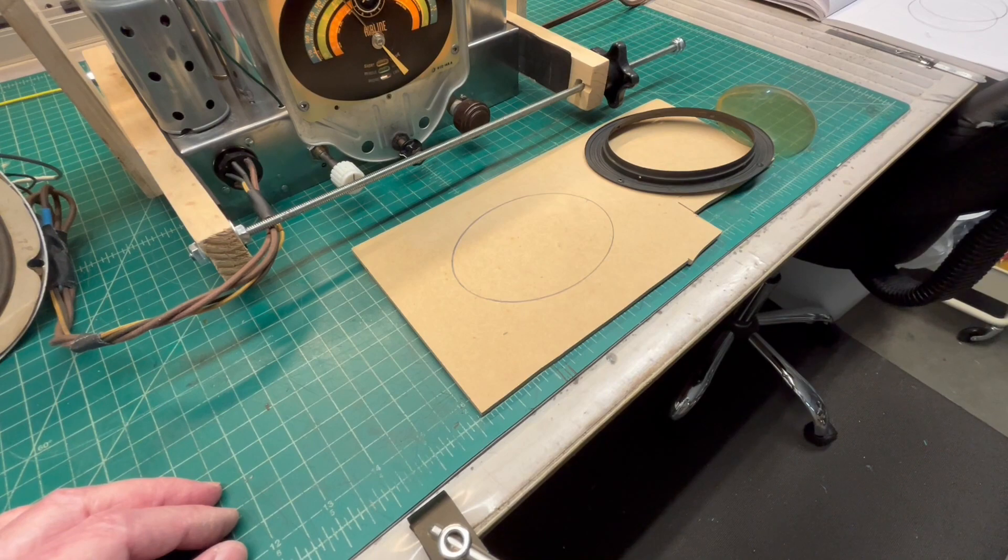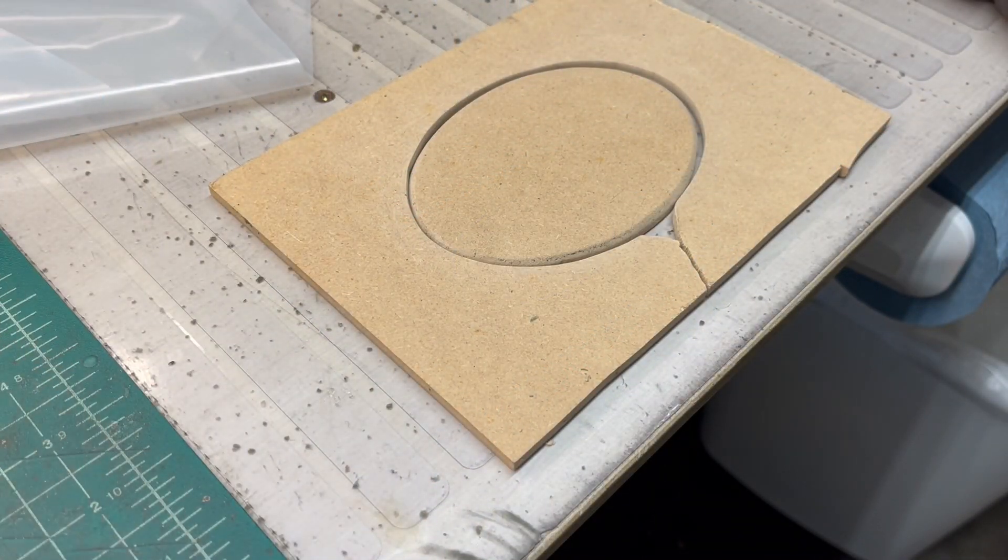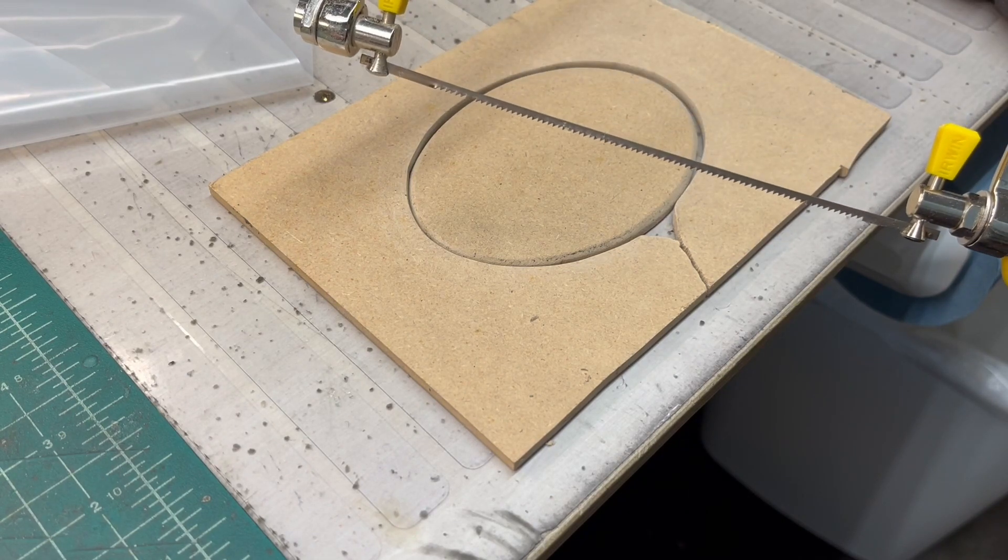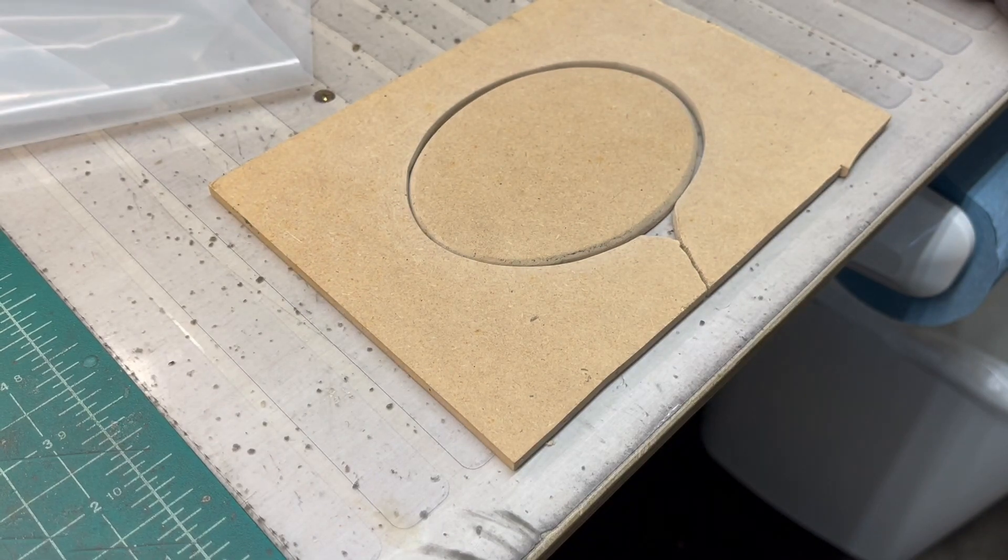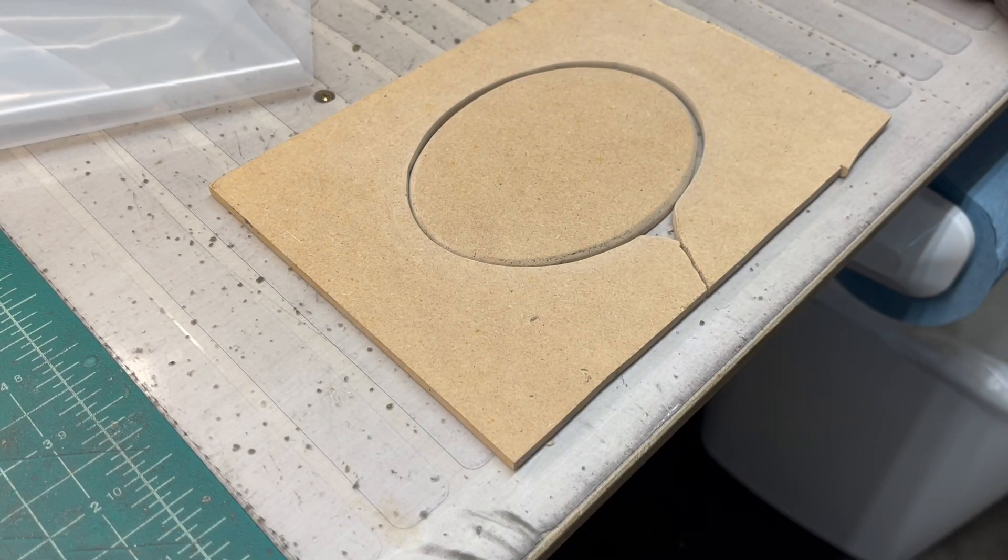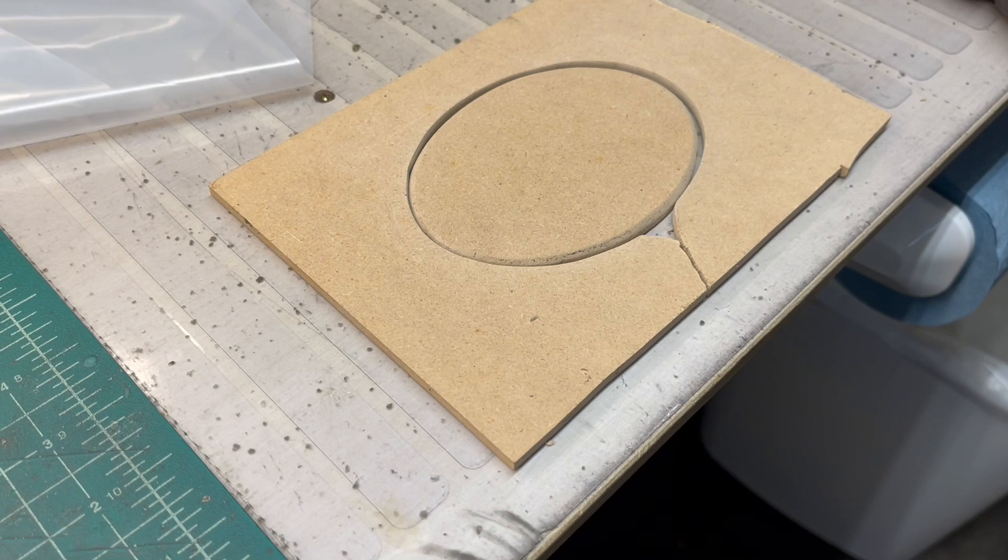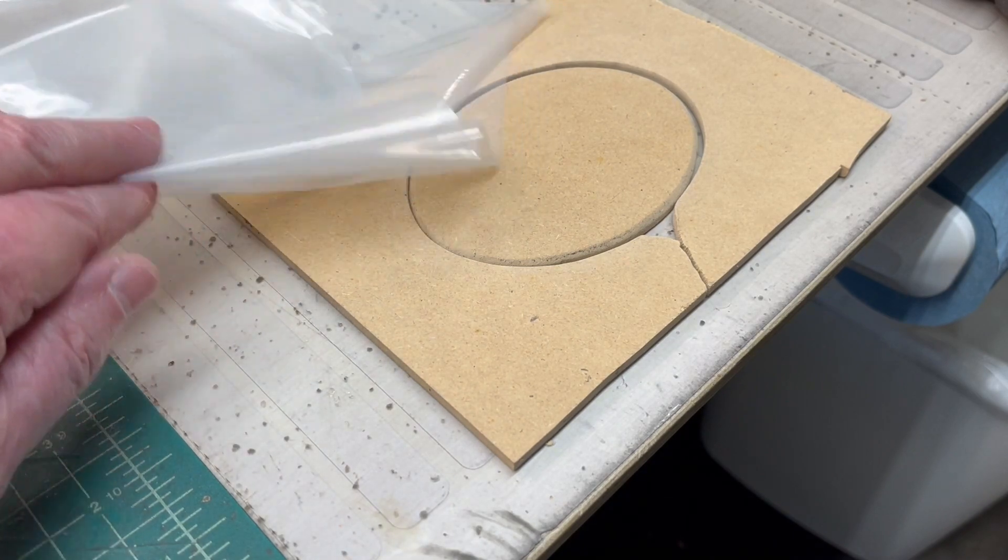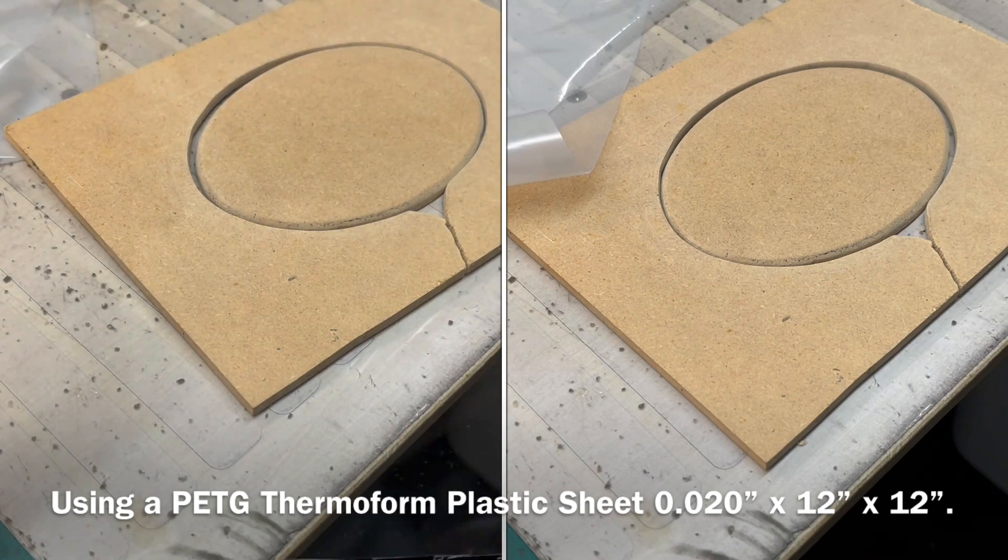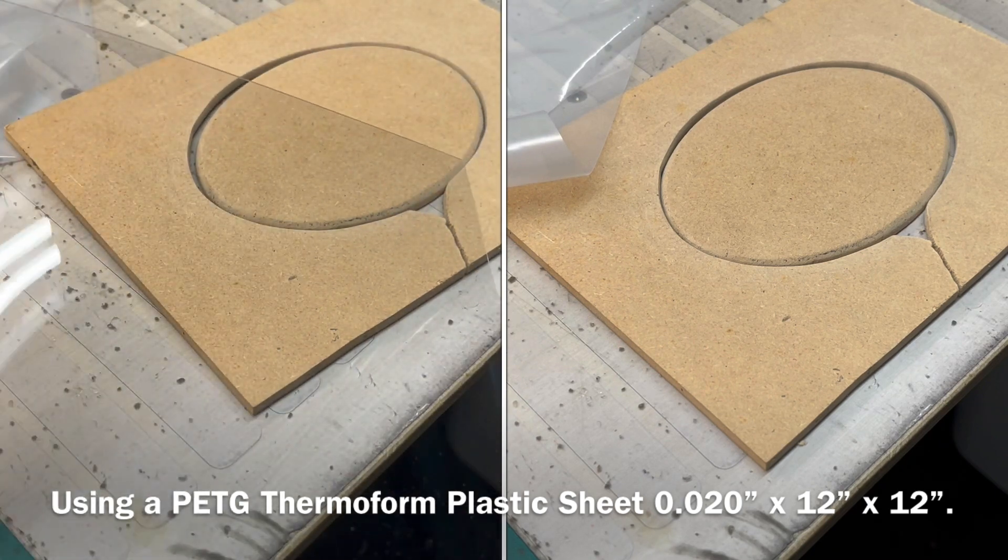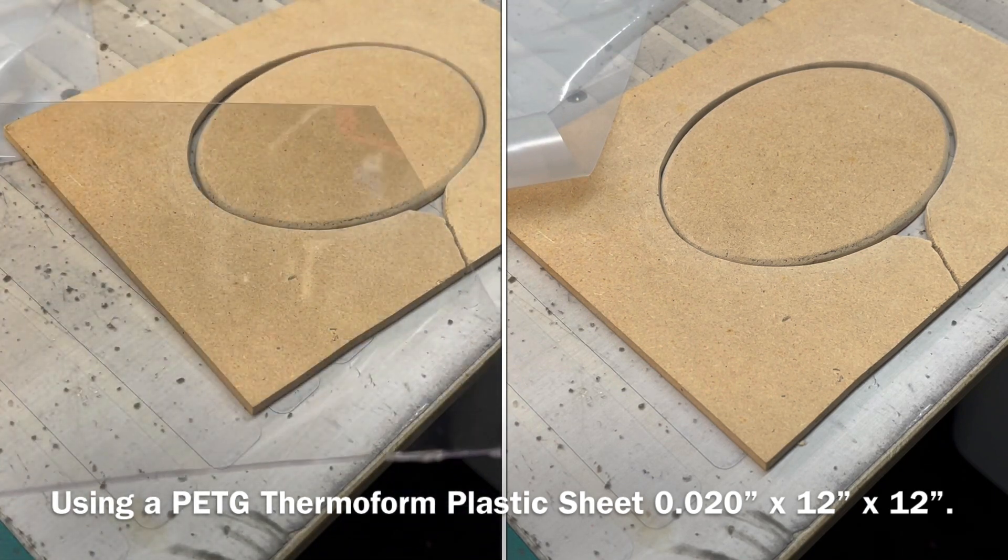You guys can see I've got the form factor cut out now using my coping saw. Did the best I could and went back with some sandpaper, cleaned up the edges, and also created a little bit of a bevel as well to somewhat mirror the original design. You can see I've got the protective pieces off of the PETG plastic sheets that I'll be using, 0.02 inches in thickness.